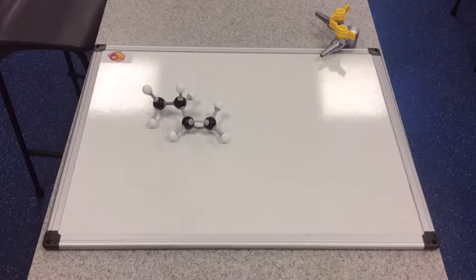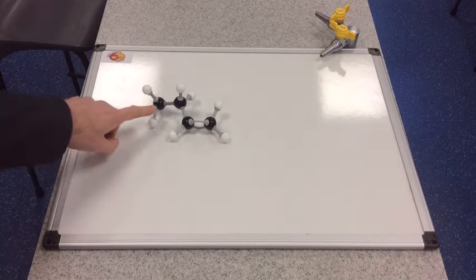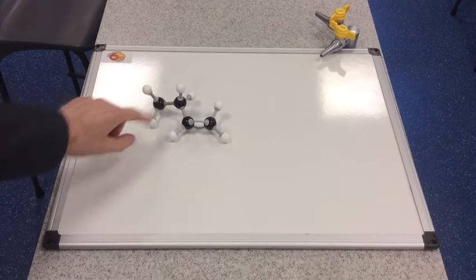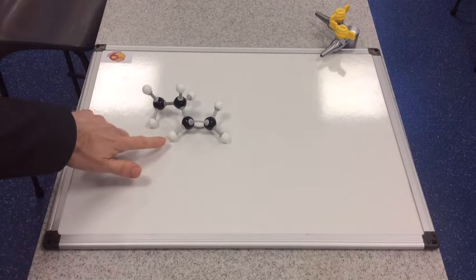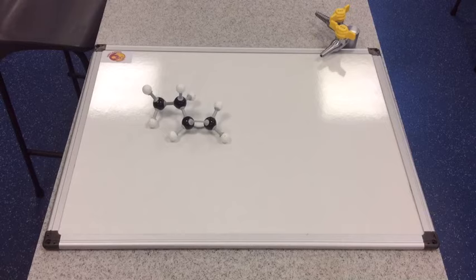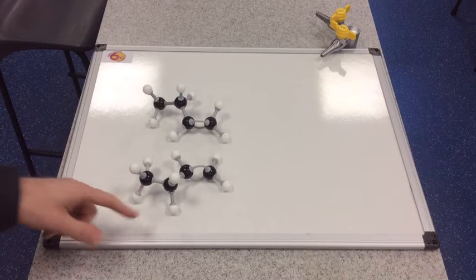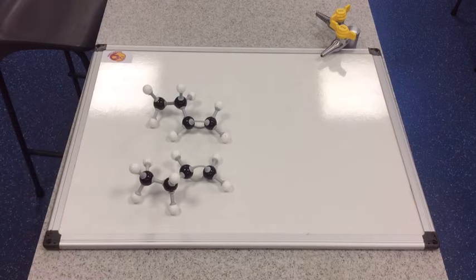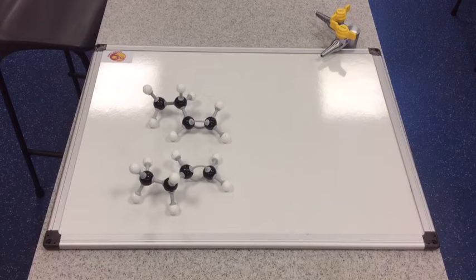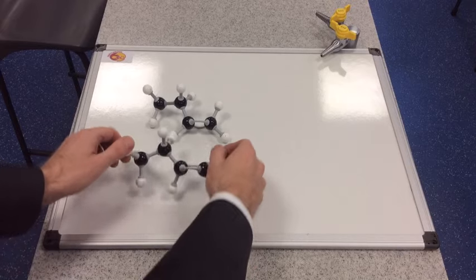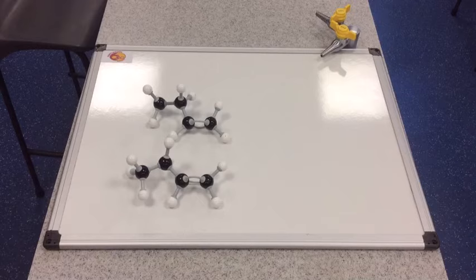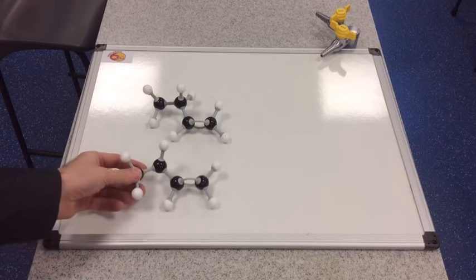I've got a butene molecule here, and what I'm going to do is swap this ethyl group, CH2CH3, with this hydrogen here. What we're going to try and find out is have we made a different molecule. So here's the result — I've swapped the ethyl group round, it's now at the bottom, and the hydrogen's at the top. Hopefully you can appreciate that they're actually the same molecule, because if I do that, it's exactly the same. There's no difference between these two molecules.